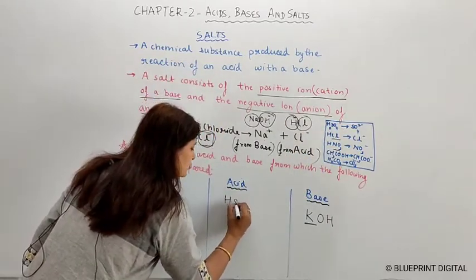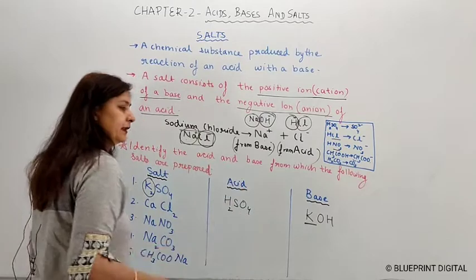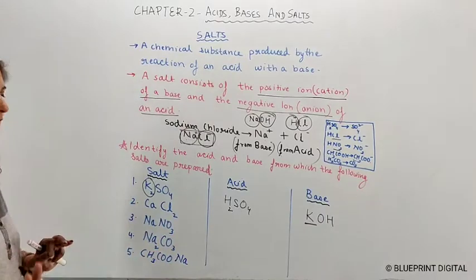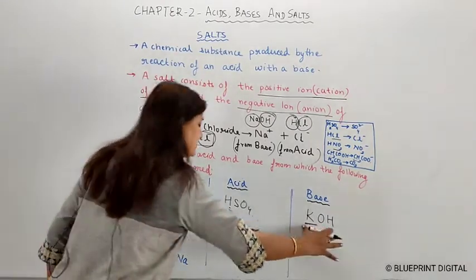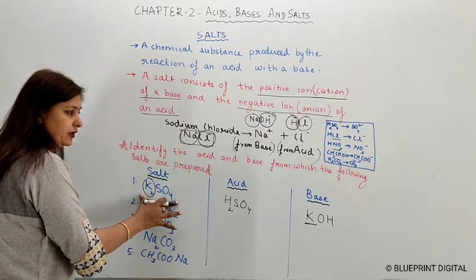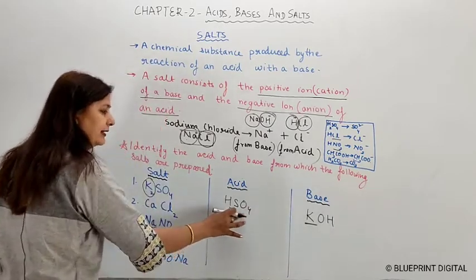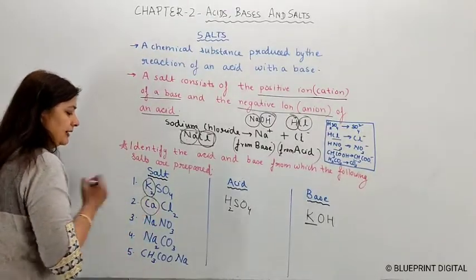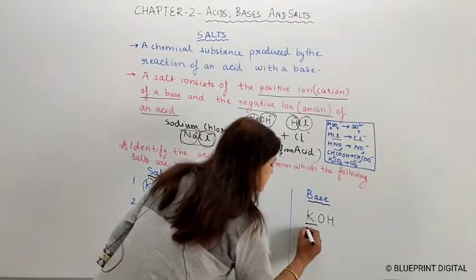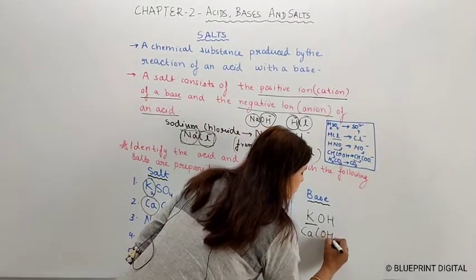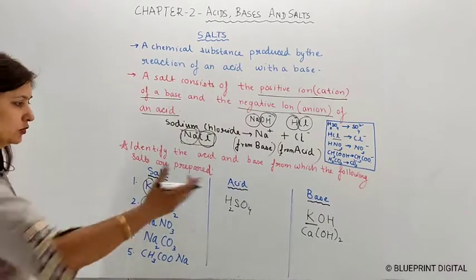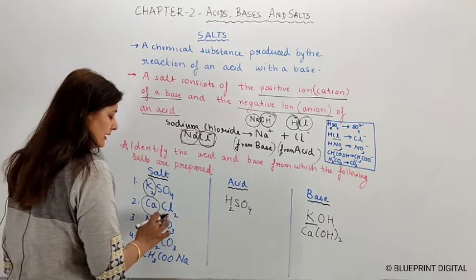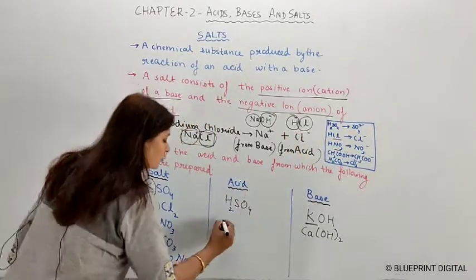The acid is H₂SO₄. The H ions and OH ions combine to form water. So when we combine sulfuric acid and potassium hydroxide, our salt will be potassium sulfate — potassium came from the base and sulfate ion came from the acid. Next, calcium chloride: the base is calcium hydroxide, Ca(OH)₂, and I have told you that chloride ion comes from hydrochloric acid, HCl.